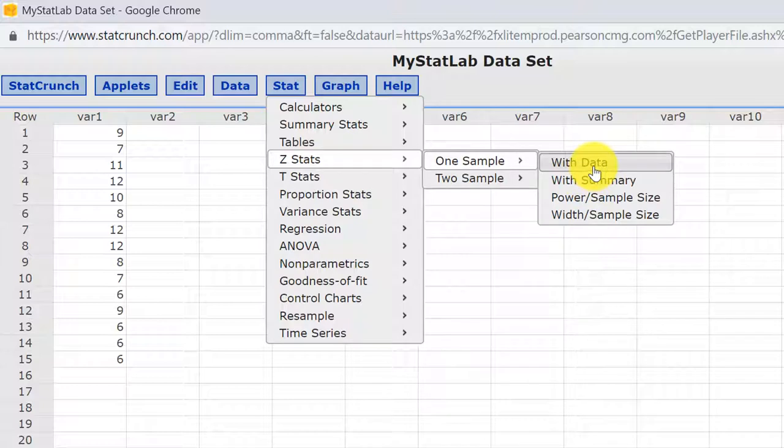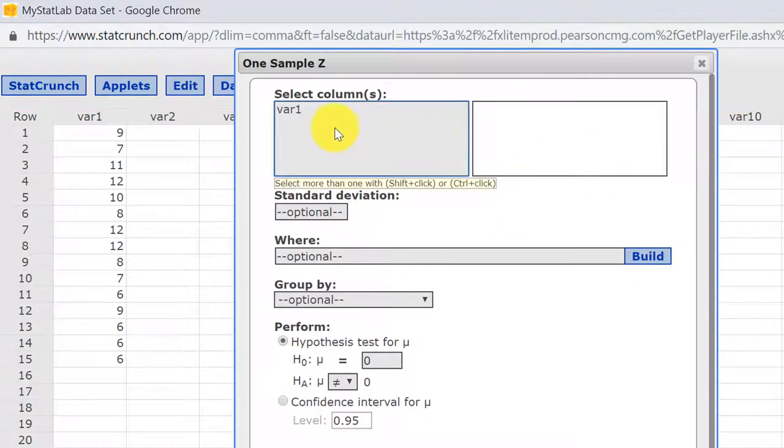We don't have the summary, we have the data. So I'm going to click on that, open up the dialog box, and select the column that has our data, variable 1. Here's a critical point that many people miss: we have the sigma, so we need to enter that 2.1 minutes, and we want a confidence interval.